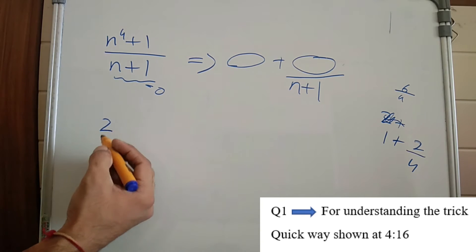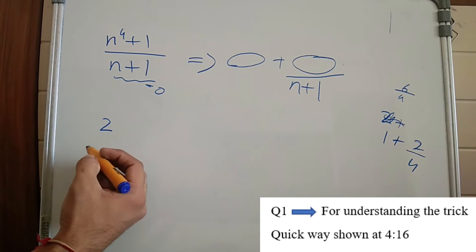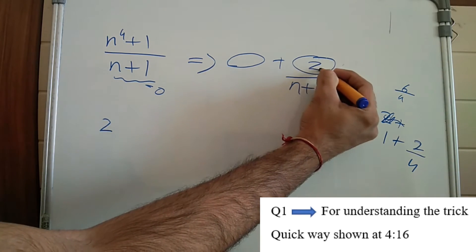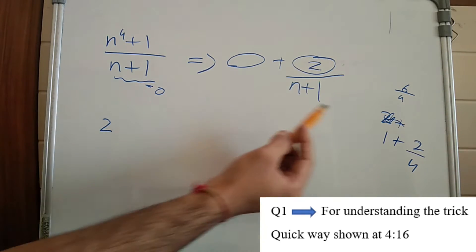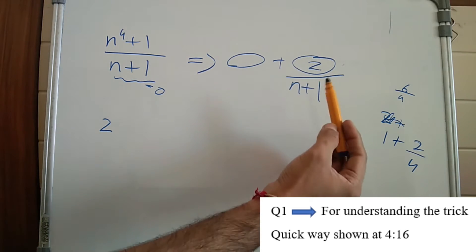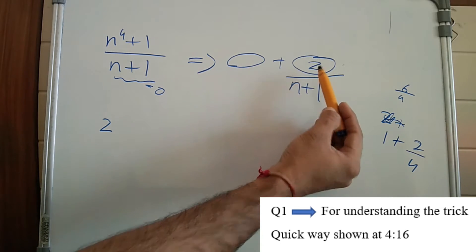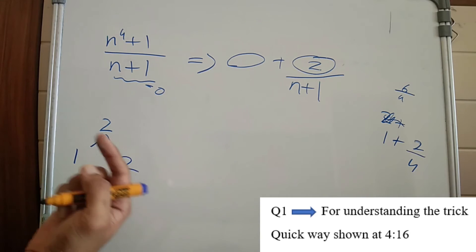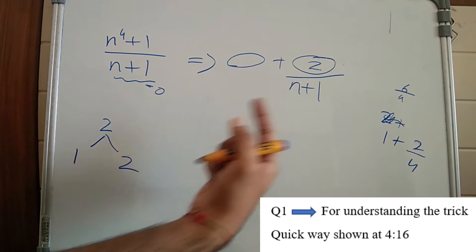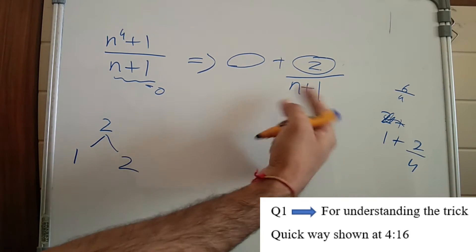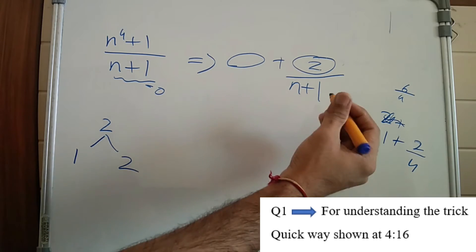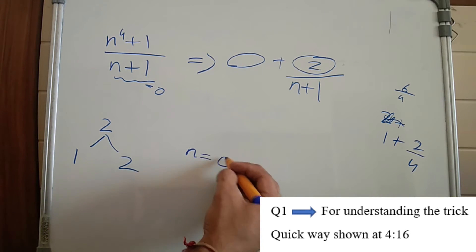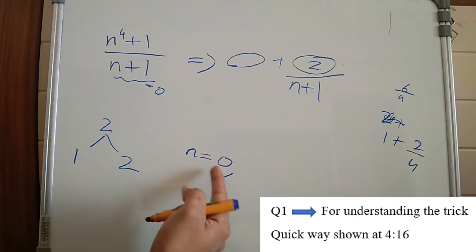So the remainder is 2. This expression will be an integer when n plus 1 is a factor of 2. The factors of 2 are 1 and 2 only — there are only 2 factors. If n plus 1 is equal to 1, then n will be 0. So one value of n is 0.